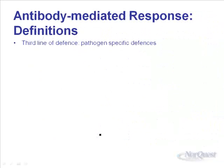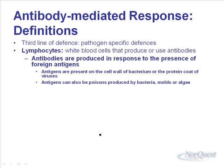The antibody-mediated response starts once a helper T cell has interacted with a macrophage and confirmed there's something foreign in our body. It's our third line of defense — pathogen-specific — and it's conducted by lymphocytes, white blood cells that produce or use antibodies. The antibodies are produced in response to the presence of foreign antigens grabbed by macrophages. Antigens are present on the cell wall of bacteria or the protein coat of viruses. They're also present in some poisons produced by bacteria, molds, or algae, so we can have an antibody response even to things that aren't necessarily alive.